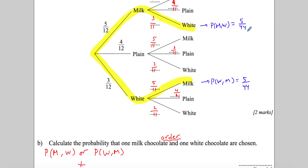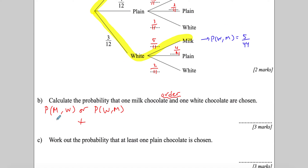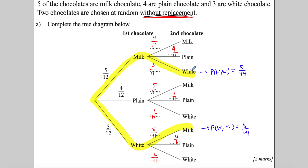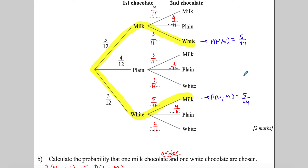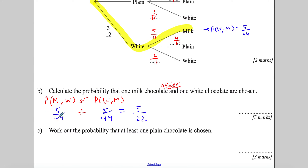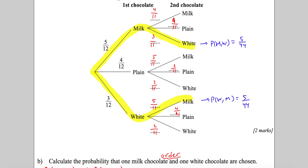You only add after you've calculated each branch probability. So 5/44 + 5/44 = 10/44 = 5/22. That's the answer for part b. The key rule: multiply probabilities along a branch, then add across multiple branch options.